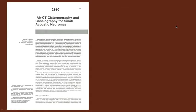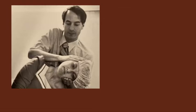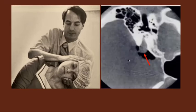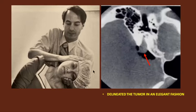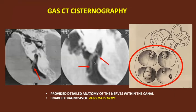This article appeared in AJNR in its very first issue, January-February 1980. I performed the lumbar puncture, injected three cc's of room air under fluoroscopy, and transported the patient to the CT suite. This delineated the tumor in an excellent fashion, and the study was consistently diagnostic. Furthermore, this examination provided detailed anatomy of the nerves within the canal and enabled the diagnosis of vascular loops.